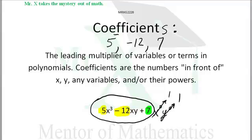But don't get mad at your teacher if he or she says no, you only have two coefficients, 5 and 12 or 5 and negative 12. So just relax, it's okay.